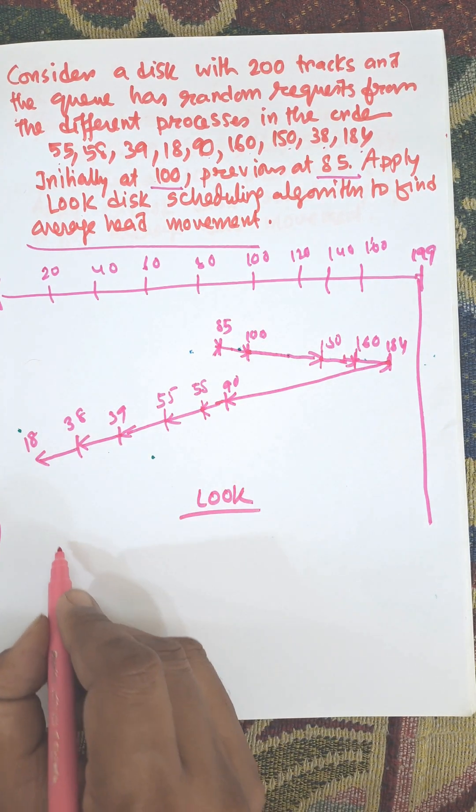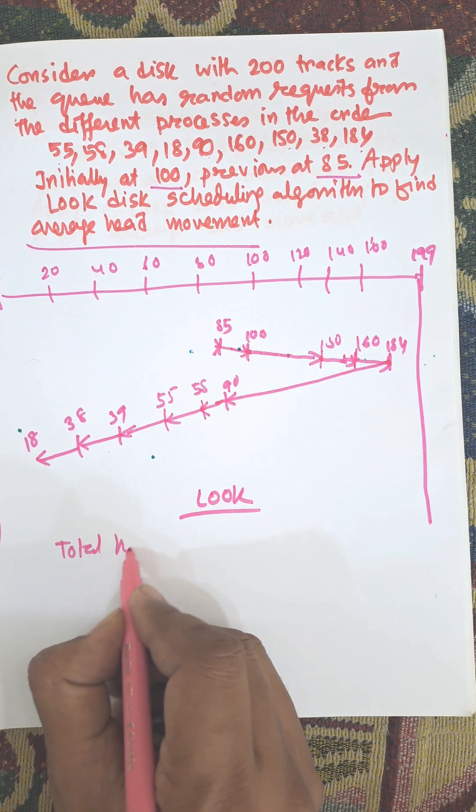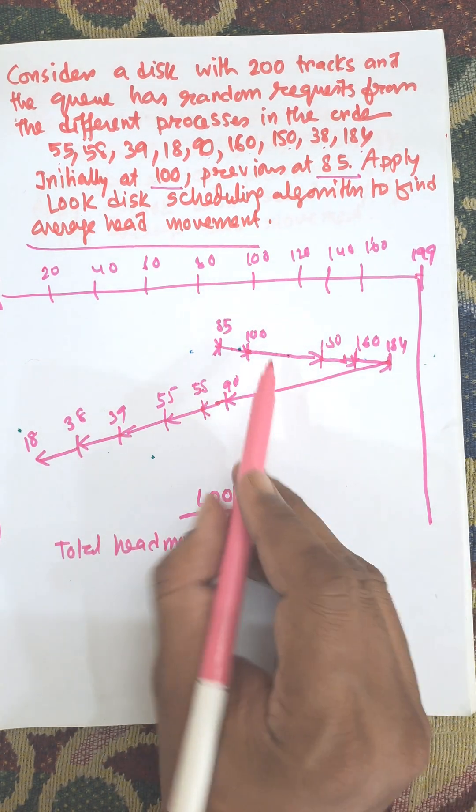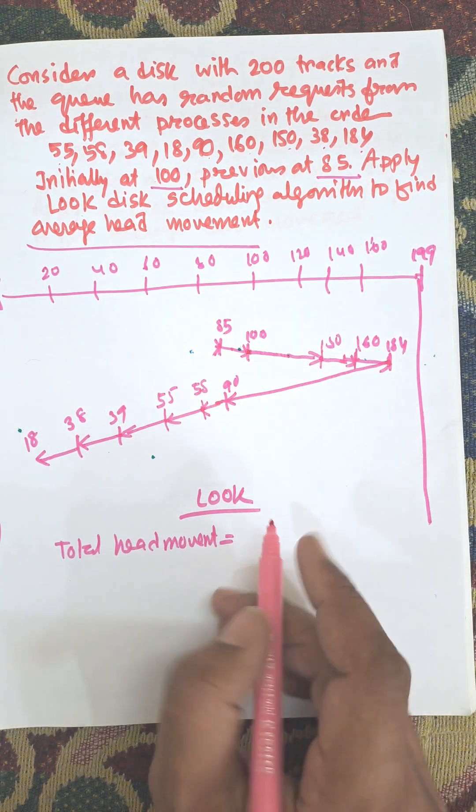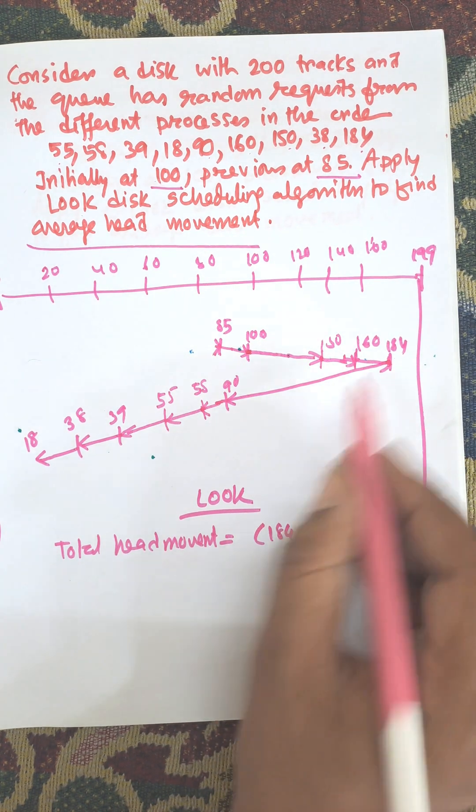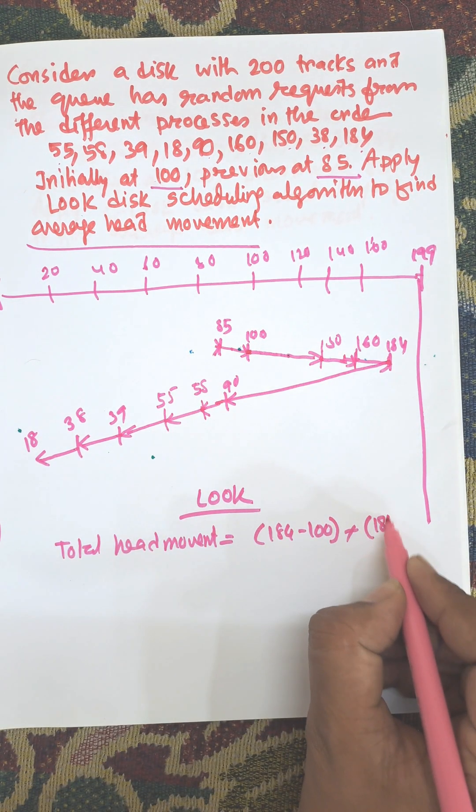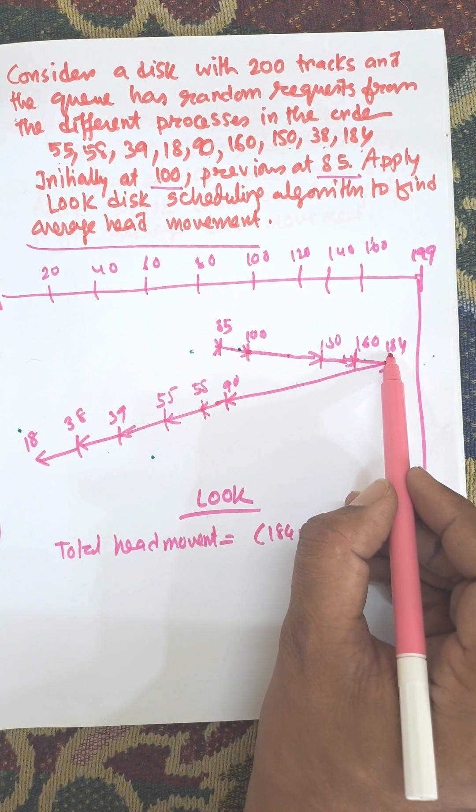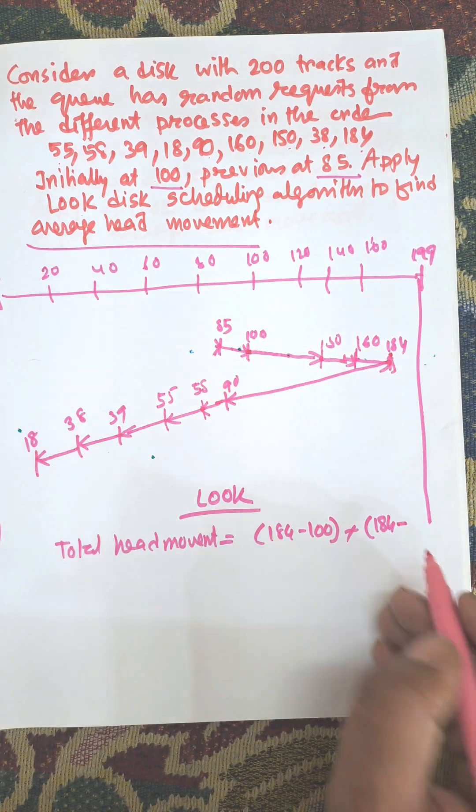Now, the total head movement equals—just calculate from the initial position: 184 minus 100, then plus 184 minus 18. As we are moving the same path, just subtract the highest number and the lowest number, that is 18.